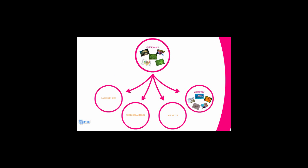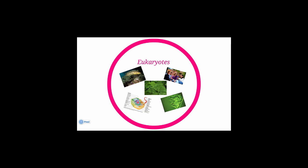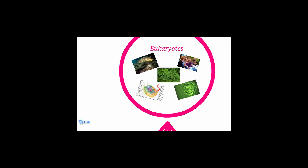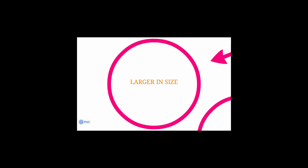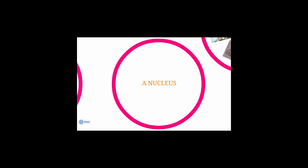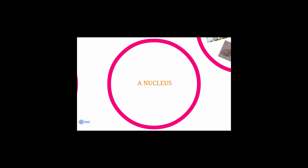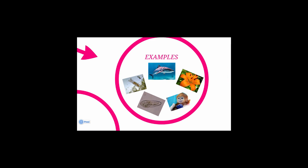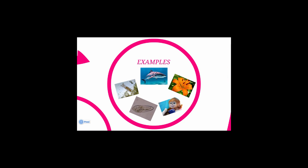Now, when we look at eukaryotes, eukaryotes encompass everything else. We've got single-celled organisms, we have plants, we have animals — you, you are a eukaryote. The difference is that eukaryotes are much larger in size. They also have many organelles, and because they have many organelles, we say that they're highly complex. And they do have a nucleus, and that nucleus encloses the organism's DNA. So sharks, and flowers, rotifers, and little cute monkeys — those things are all eukaryotes.